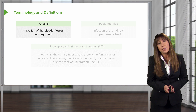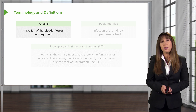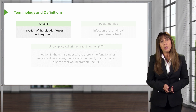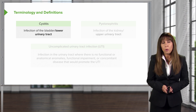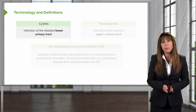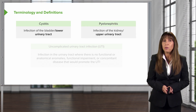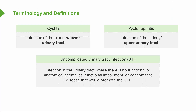Before we move on, it's important to review some terminology and definitions. Cystitis is infection of the bladder or lower urinary tract. Pyelonephritis is infection of the kidney or the upper urinary tract. An uncomplicated urinary tract infection is infection in the urinary tract where there's no functional or anatomical abnormality, no functional impairment, or concomitant disease that would promote the UTI.